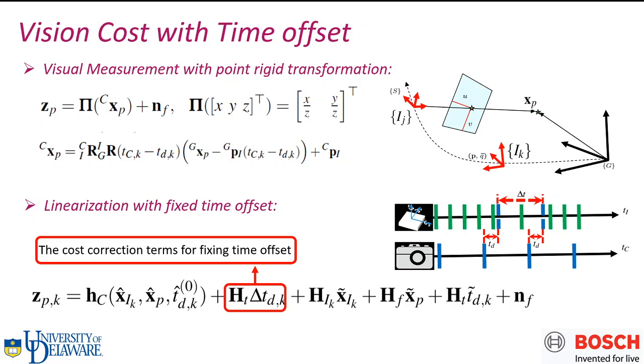Besides the IMU constraints, we also need to model the vision cost from the VINS system. The VINS cost is just the pixel measurements of the landmark.